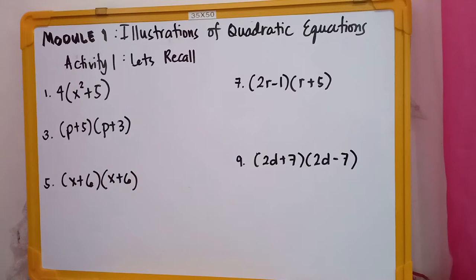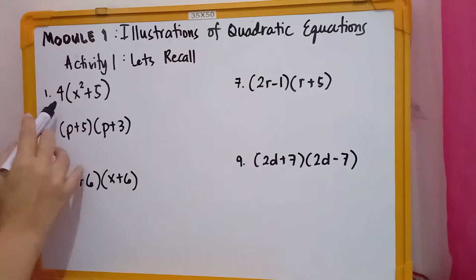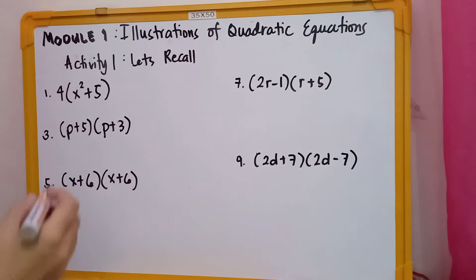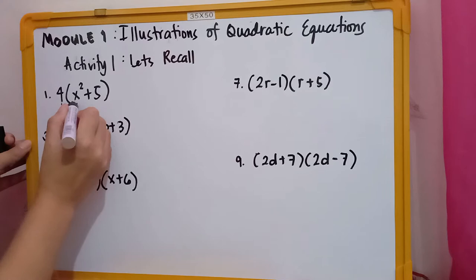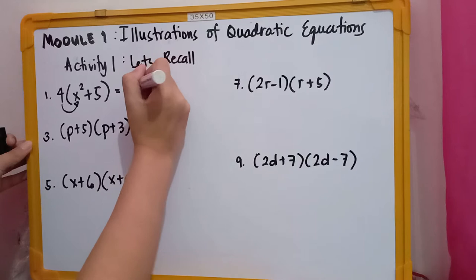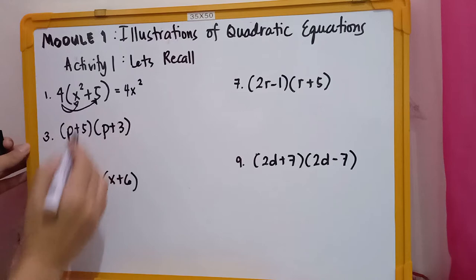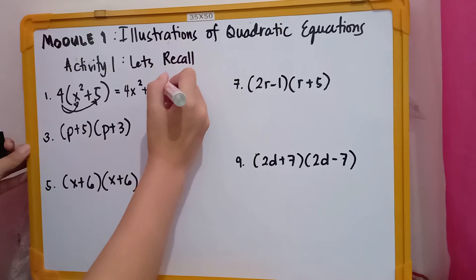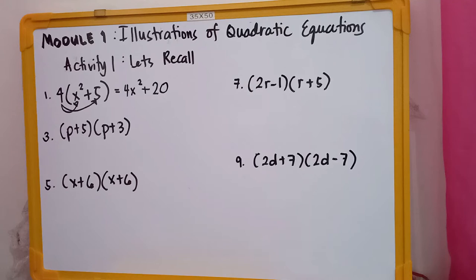The first one, we have 4 times quantity x squared plus 5. This is a monomial times a binomial. So, how do we simplify this one? Just by distributive property. We now have 4 times x squared, that means 4x squared. And then we have 4 times 5, that is positive 20. So the product on our first problem is equal to 4x squared plus 20.